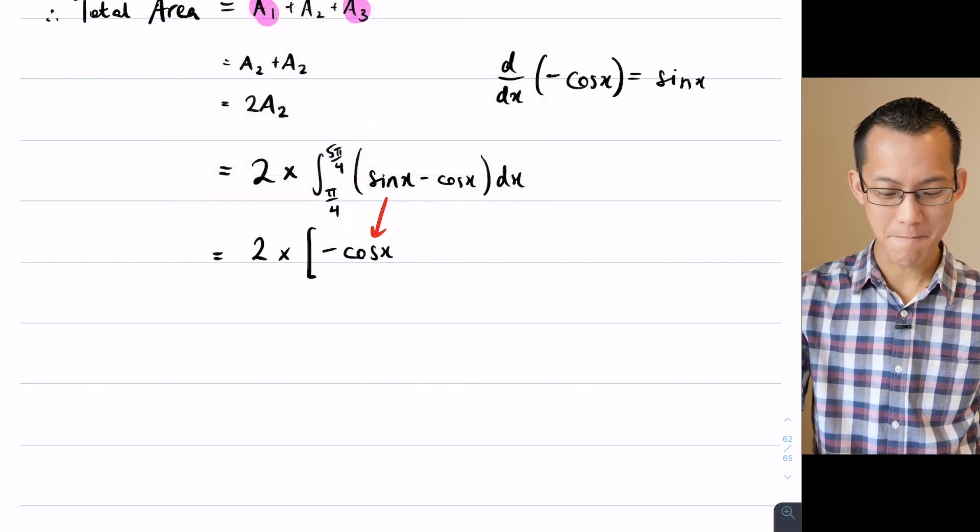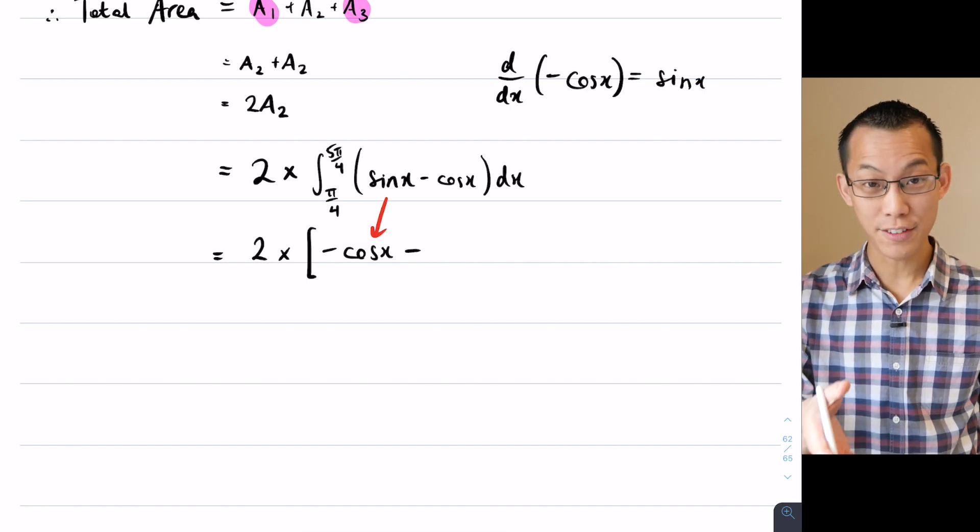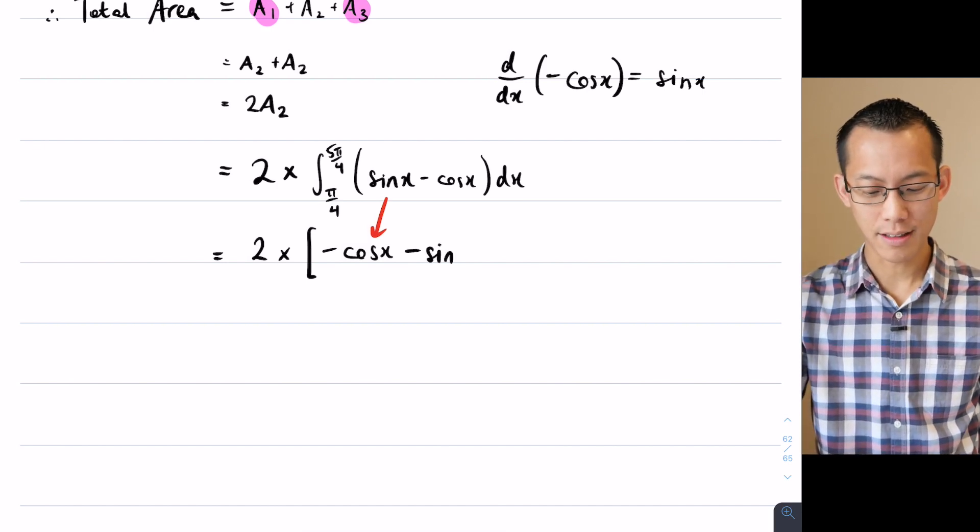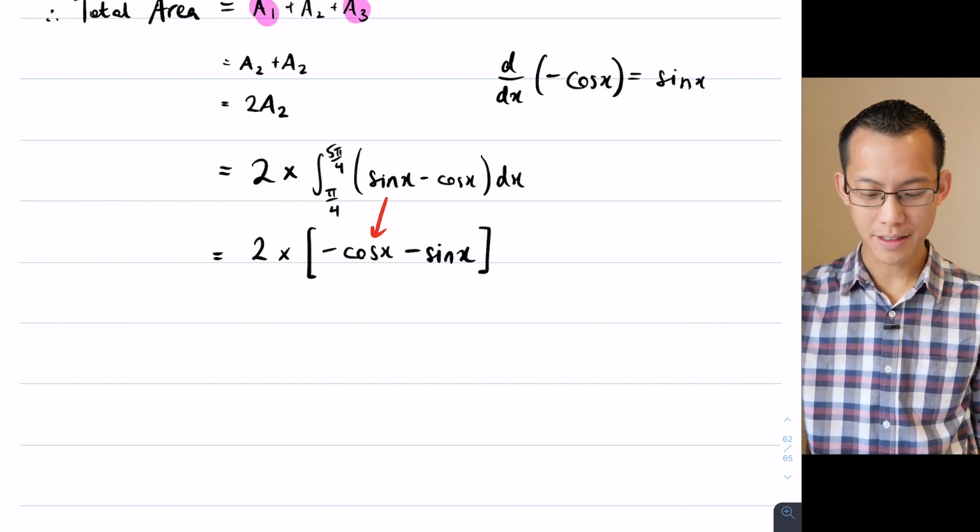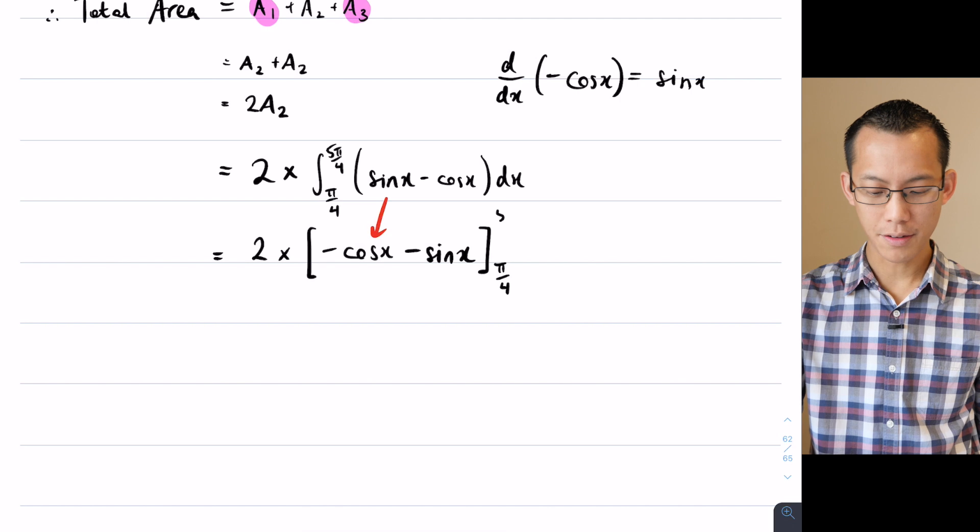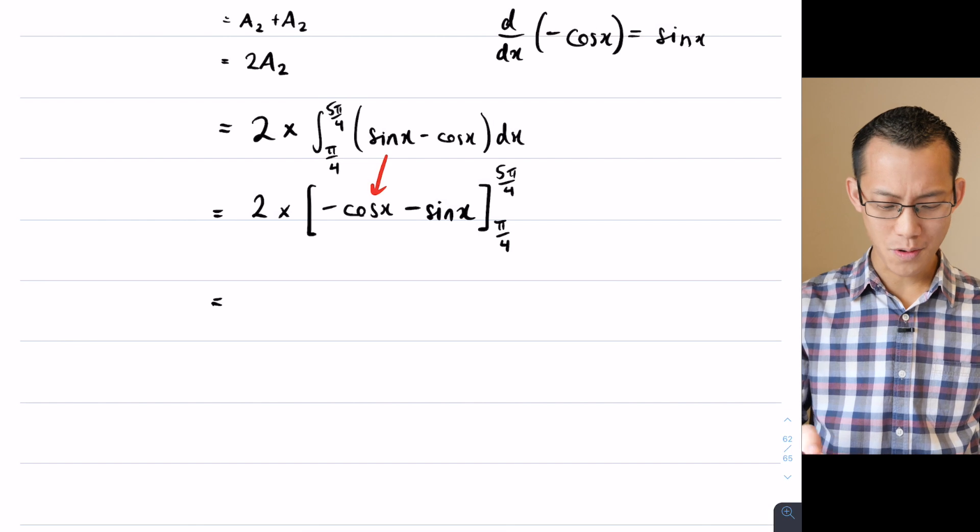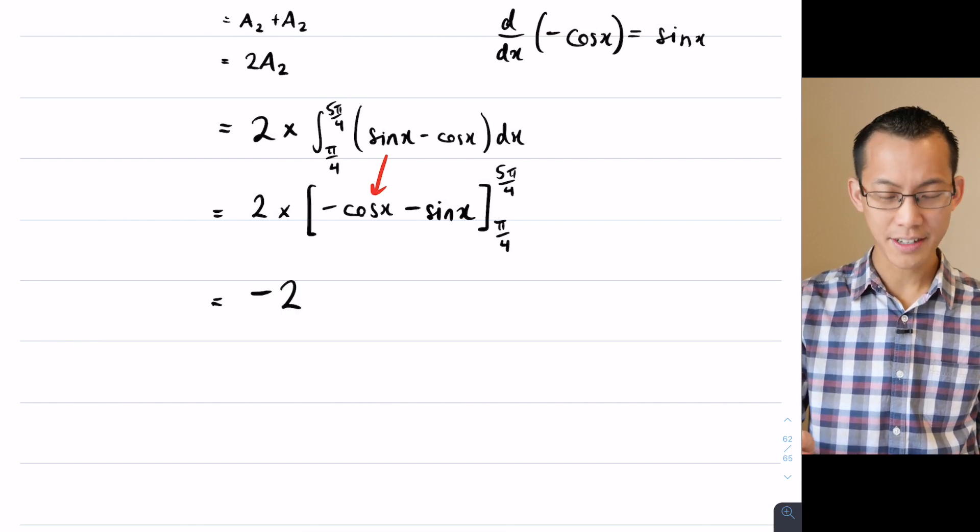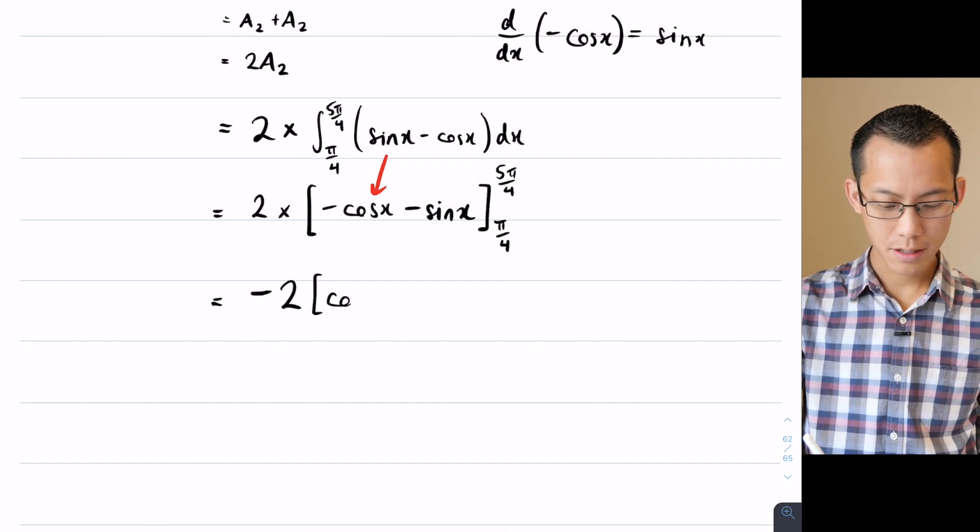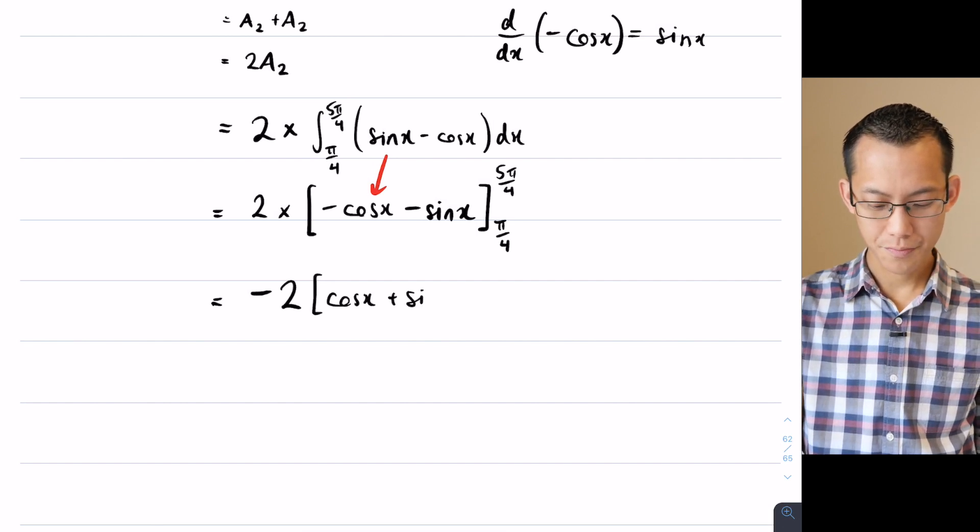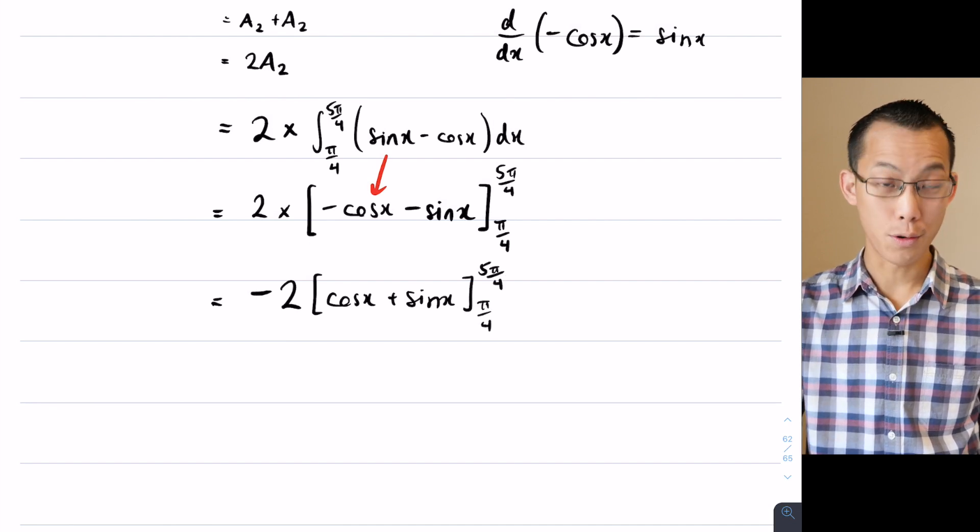Got that? Okay, now in the same way, when I think about minus cos, what's the function that if I differentiate it gives me minus cos? Well, it's going to be minus sine, like so. So there is my primitive function, and I'm about to evaluate that from pi on 4 to 5 pi on 4.